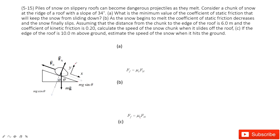First, looking at the y-component, we write Newton's second law: F minus mg cos θ equals zero. Then for the x-component: mg sin θ minus friction equals zero. In this case, the friction is static friction, equal to μs times F. Solving these three equations, we get μs equals tan θ. So part one is solved.